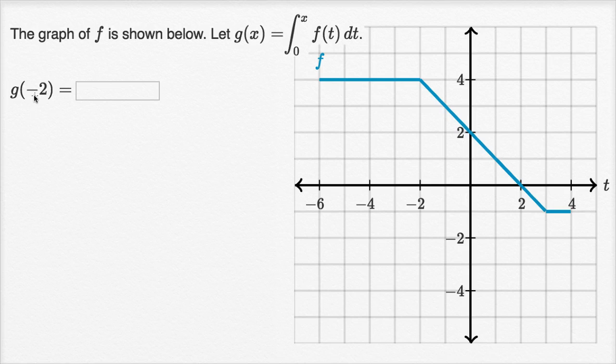it's actually quite straightforward to evaluate this. So g of negative two, and I'll do the negative two in a different color, g of negative two, well, what we do is we take this expression right over here, this definite integral, and everywhere we see an x, we replace it with a negative two.